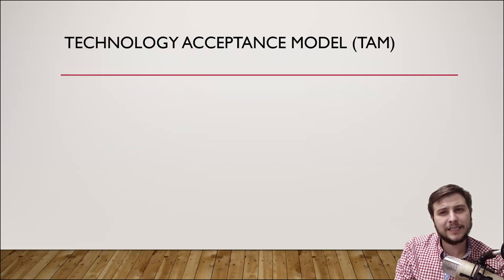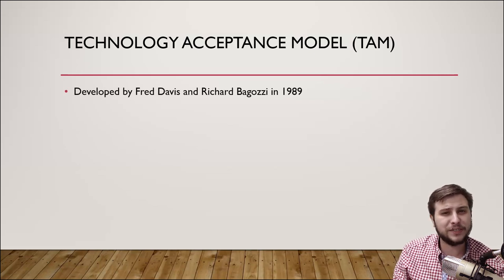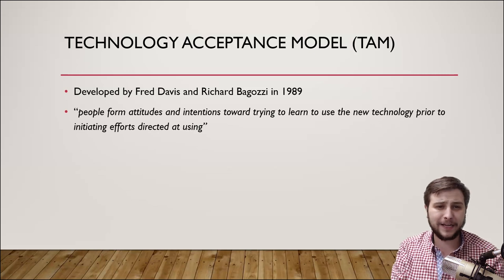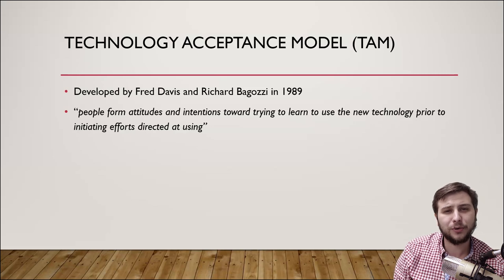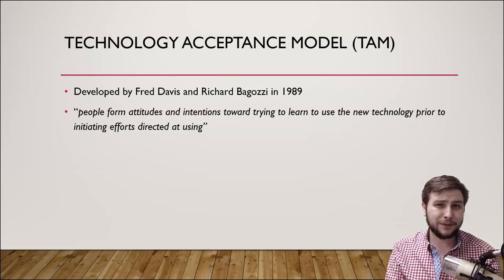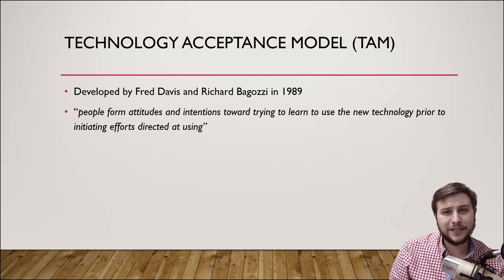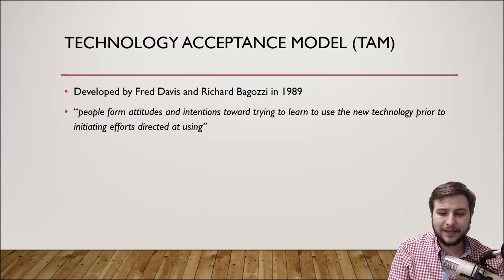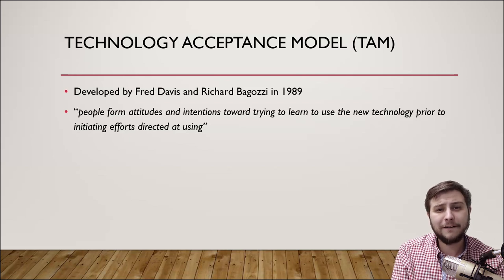The Technology Acceptance Model, or TAM for short, was first created by Fred Davis and Richard Boghossi in 1989. In their paper, they came to the conclusion that people form attitudes and intentions toward trying to learn to use new technology prior to initiating efforts directed at using it. Simply put, a person will make a cognitive decision and create a bias without ever interacting with a piece of technology first — bringing in attitudes about ease of use and usefulness, and whether they can make it work for them.